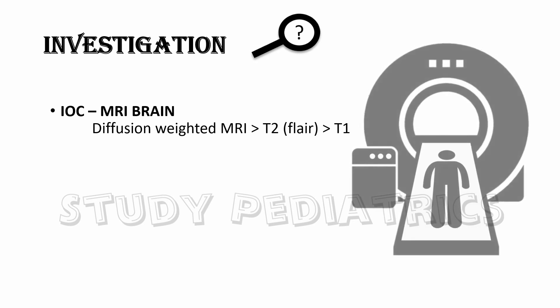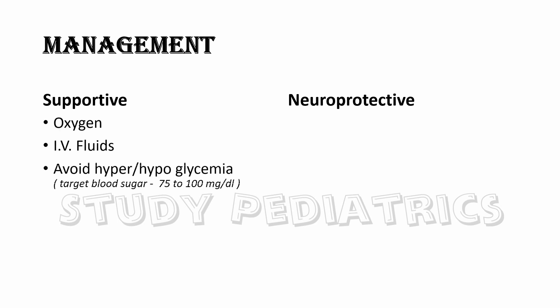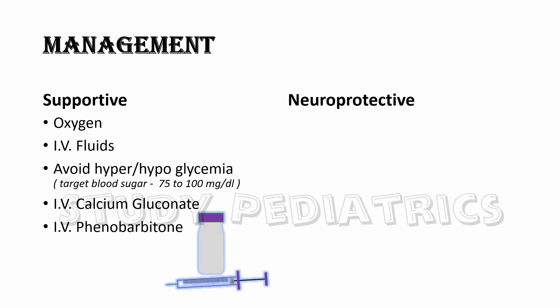Now let's see the management. Management has two aspects: supportive and neuroprotective. Supportive means to sustain the life of normal brain cells, and neuroprotective to help decrease the damage. Supportive therapy includes oxygen, fluids, blood glucose control, calcium infusion, and phenobarbitone.